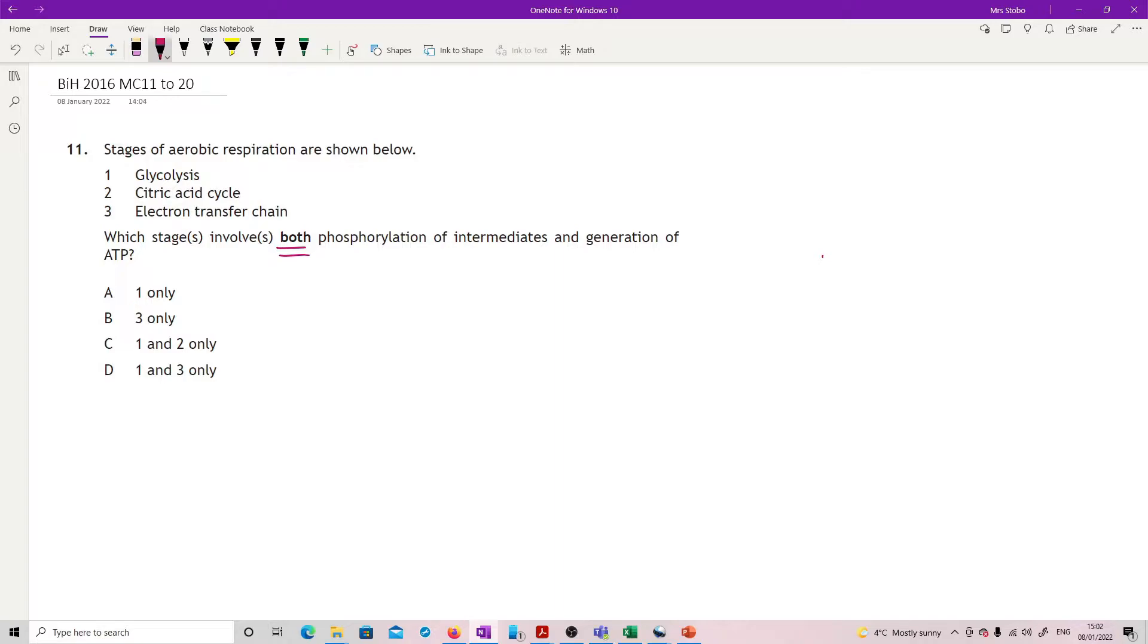You need to recognize this must be glycolysis. Phosphorylation of intermediates is your energy investment stage, and you then get a payoff stage which means you generate some ATP. Definitely just glycolysis, so definitely one only, so that's E.